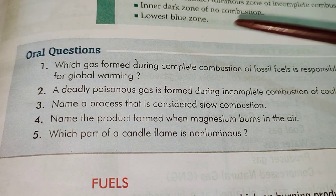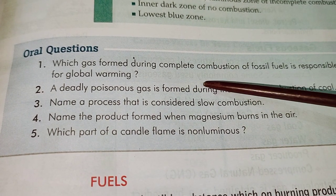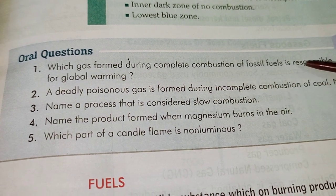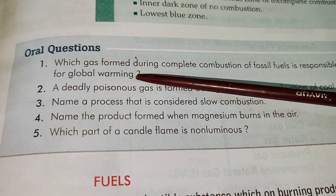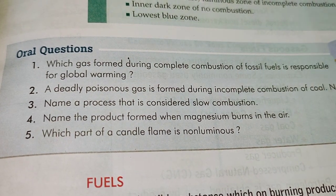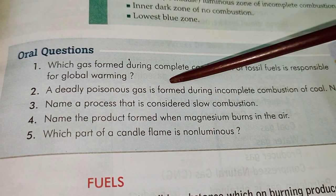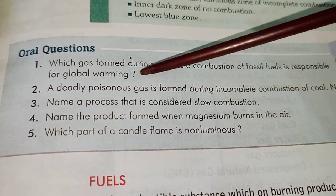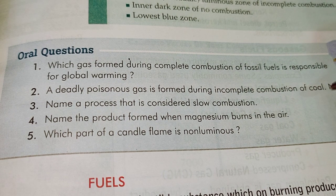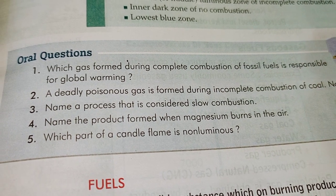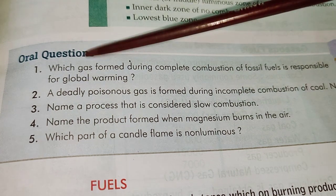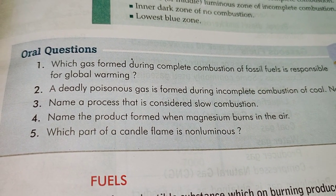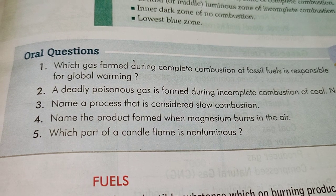After completing this part, go through and try to answer these questions: which gas formed during complete combustion of fossil fuels is responsible for global warming? The answer is carbon dioxide. Next, what is the deadly poisonous gas formed during incomplete combustion of coal? That is carbon monoxide. Students, please go through these questions and try to answer them. We will meet again in the next class. Thank you.